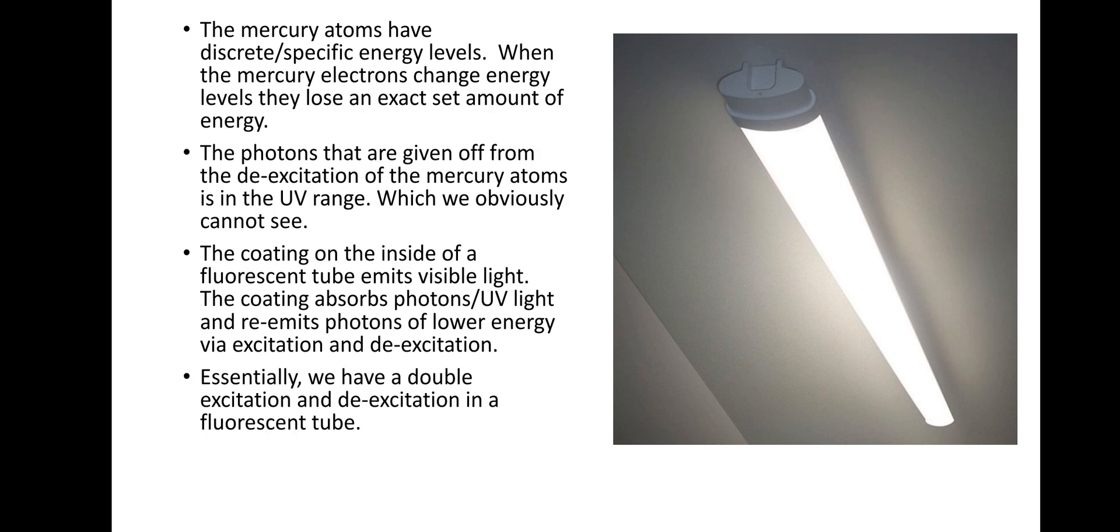So essentially the entire process for the fluorescent tube is a double excitation, double de-excitation. So the first point is the current interacts with the mercury atoms' electrons, the electrons are excited into a higher energy level, and then they drop back down energy levels and give off UV light, so a UV photon. So that UV light will then interact with the coating that's on the inside of the fluorescent tube, and then we get excitation again for the coating. So we get excitation of the electrons into a higher energy level, and when they drop back down, they give off photons of visible light. That's the trick in the exam question, knowing primarily that this process occurs twice. So the first process to make the UV light, and then the process again with the UV light to then make photons of visible light. If you want to make some notes, please do.